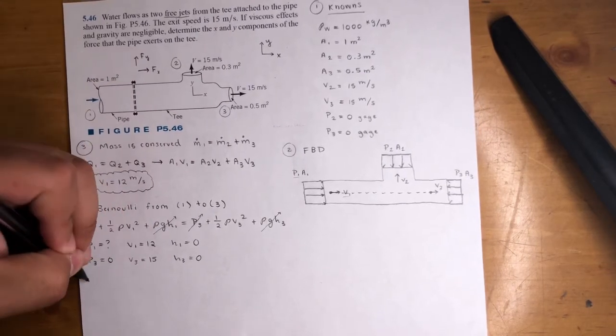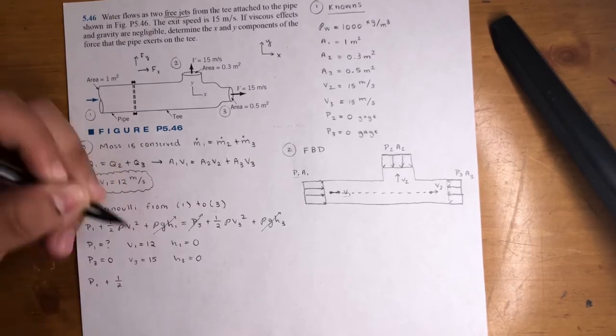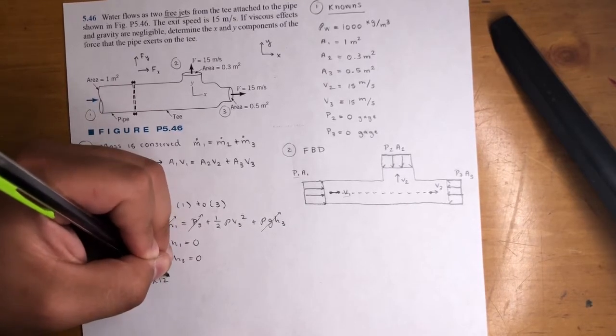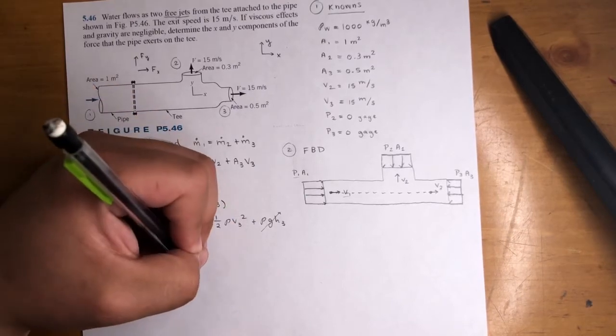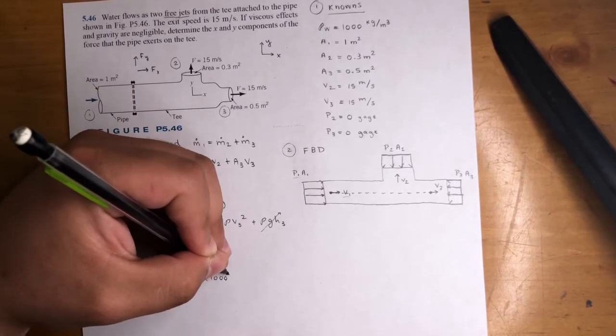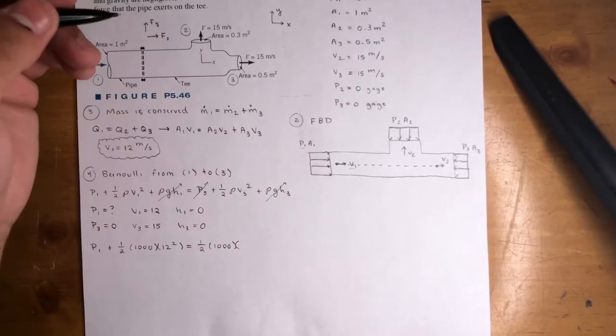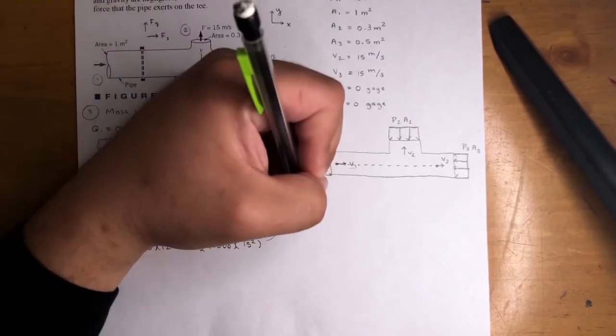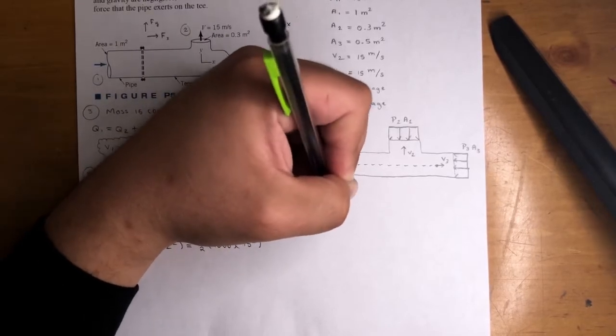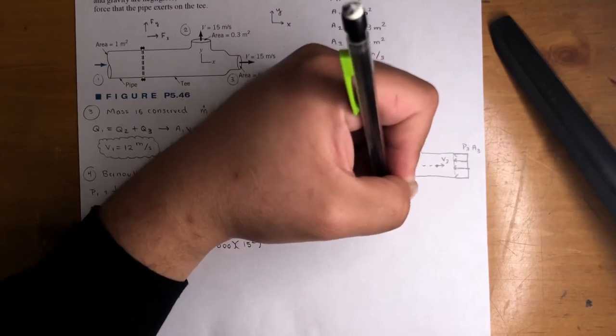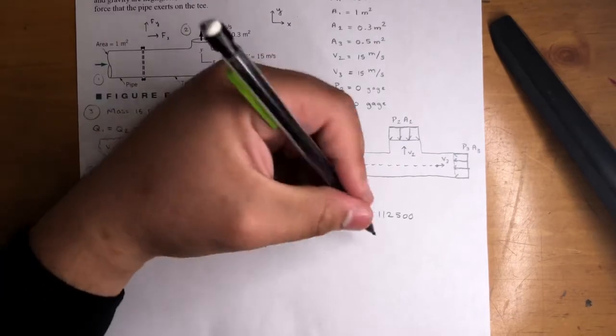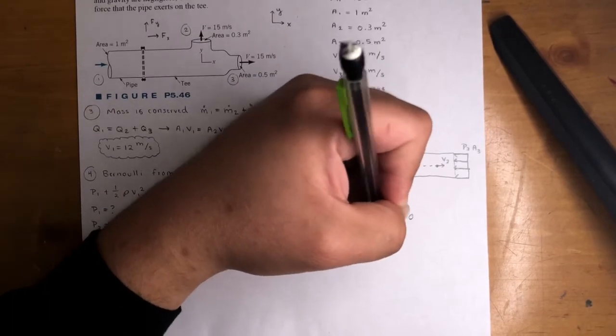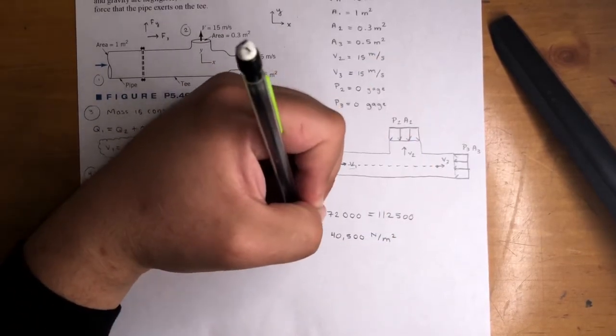P1 plus one half rho is 1,000 times V1 squared, that's 12 squared, equals one half times 1,000 density times 15 squared. If we do the math, we will get P1 plus 72,000 equals 112,500. So P1 will equal 40,500 Newtons per meter squared. Cool, we got that one.